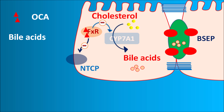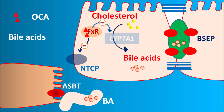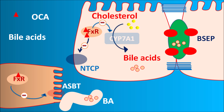At the enterocytes of the terminal ileum, the ASBT (apical sodium bile acid transporter) is present. Bile acids at the terminal ileum are absorbed through this pump, but OCA binding to farnesoid X receptors can inhibit ASBT activity, reducing bile acid absorption and transport back to the liver. Additionally, FXR activation by OCA increases release of the enterokine FGF19 (fibroblast growth factor 19), which acts on corresponding receptors on hepatocytes to inhibit CYP7A1, further reducing bile acid synthesis from cholesterol and lowering bile acid levels in the liver.